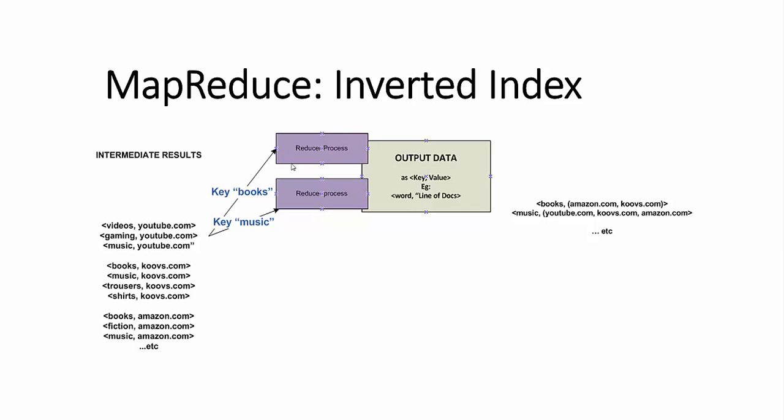All key-value pairs with the same key, for example 'books,' will be sent to the same reducer, maybe reducer one. All key-value pairs which have the same key, for example 'music,' will be sent to another reducer. In this example, data is sent to two separate reducer processes. In reality, a single reducer may process multiple keys.